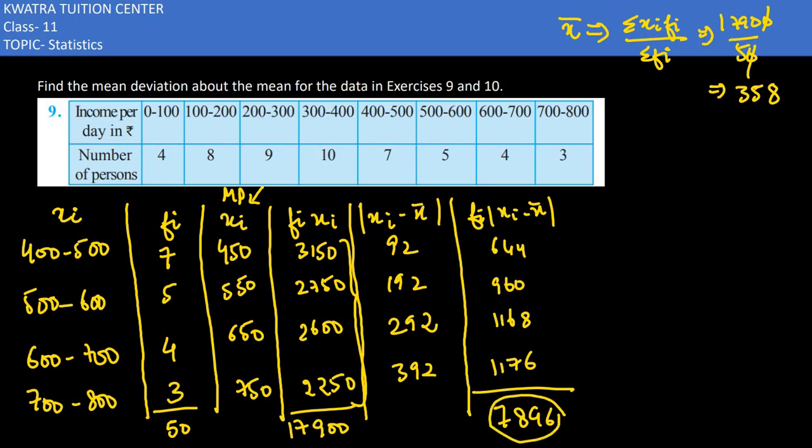And what do we take in mean deviation? This summation and this summation. So the mean deviation is 7896 divided by 50, which is 157.92. So the mean deviation comes out to be 157.92.